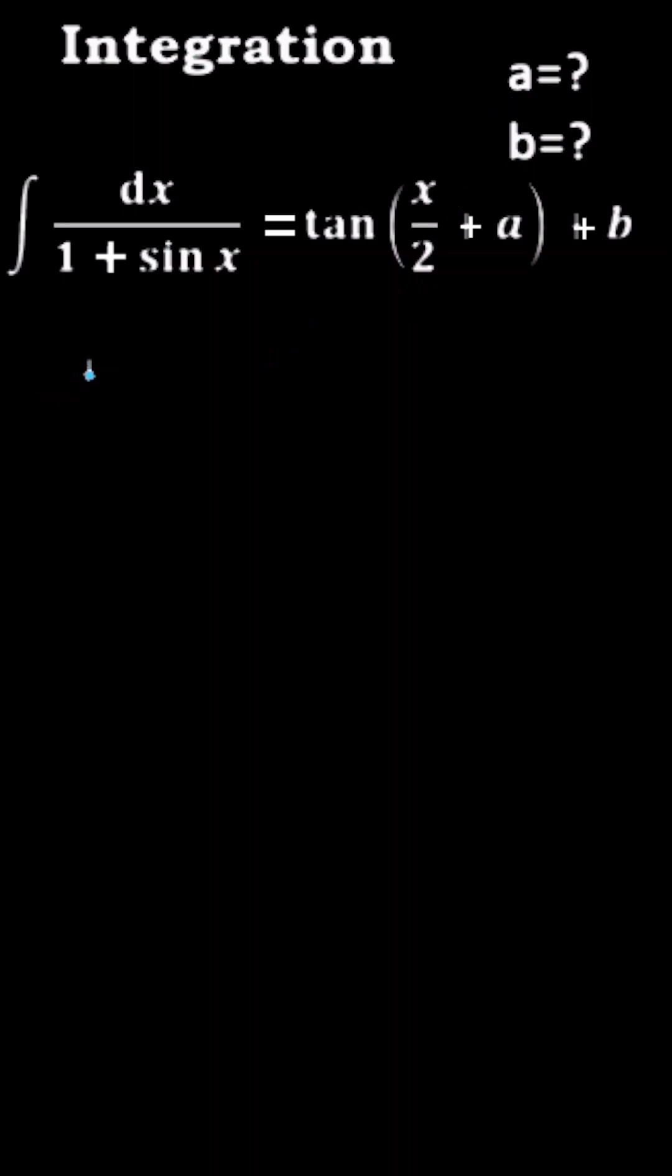Let I equal dx by 1 plus sin x. You have to write this like dx by 1 plus cos of pi by 2 minus x.